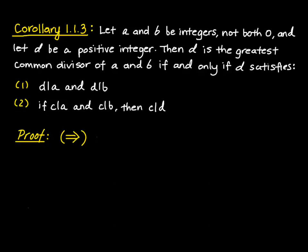In this video, we focus on a corollary that gives us another characterization of the greatest common divisor of two elements. Here, we're assuming that we've got two integers that are not both zero, and we have D, a positive integer, that's the greatest common divisor of them both.